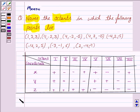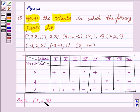Let us now move on to the solution. The first point is (1, 2, 3). We see that all three coordinates are positive, so this point lies in the first octant.